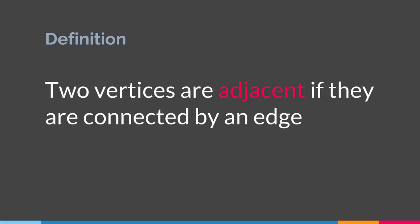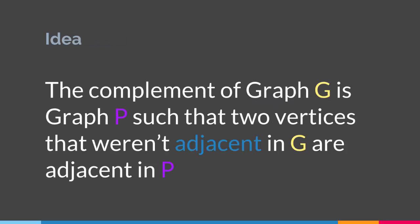So what is adjacent? Adjacent in graph theory basically means that if we have two vertices that are adjacent, that means they are connected. So if we have vertices A and B and they are adjacent, it means they are connected. So when we say the complement of a graph G is graph P, it means two vertices that were not adjacent in G are adjacent in P.